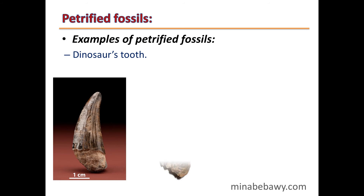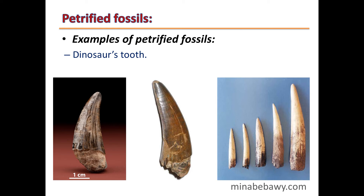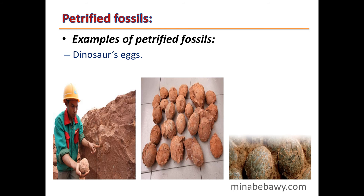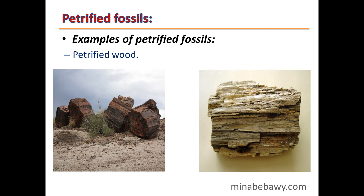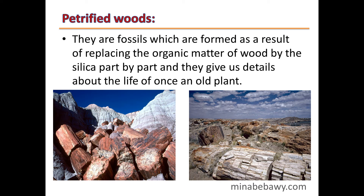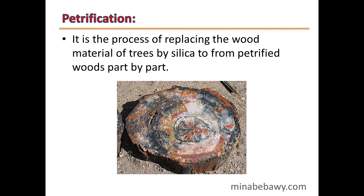Examples of petrified fossils include dinosaurs' teeth, dinosaurs' eggs, and petrified wood. Petrified woods are fossils formed as a result of replacing the organic matter of wood with silica, part by part, and they give us details about the life of an old plant. Petrification is the process of replacing the wood material of trees with silica to form petrified woods, part by part.